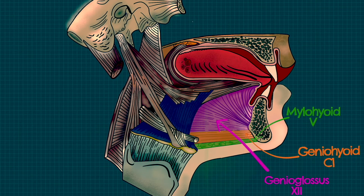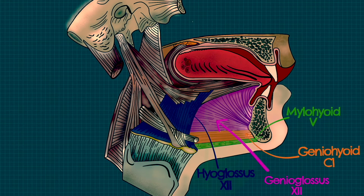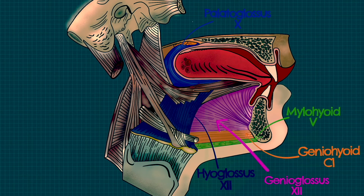The hyoglossus, seen here outlined in dark blue, is also innervated by the hypoglossal nerve. Next, we have the palatoglossus, outlined here in the lighter shade of blue. This is innervated by cranial nerve 10, also known as the vagus nerve.